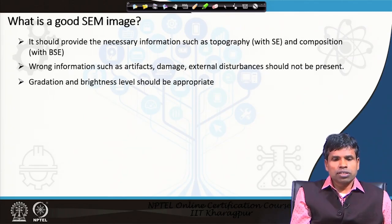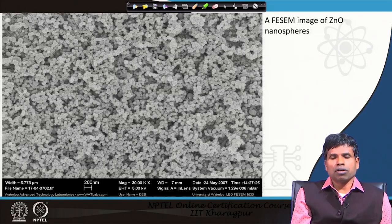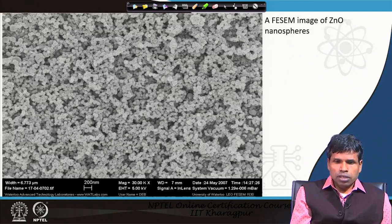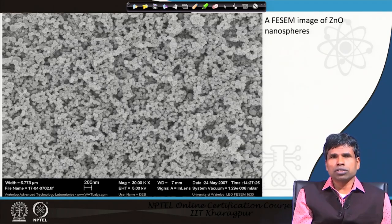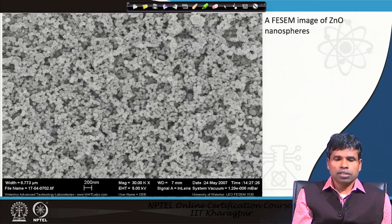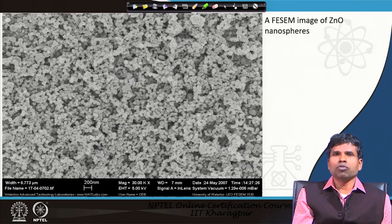Now, let us see what a good SEM image looks like. Here you see a field emission SEM image of zinc oxide nanospheres. The brightness and contrast are quite uniform throughout the region — it is not more bright on one side, every area is equally and well focused. The brightness is not too high, contrast is not too high; it is in an optimum range, giving uniformity across the image area. You see small spherical particles that are three-dimensional — that is why we can say they are spheres.